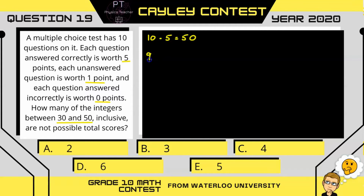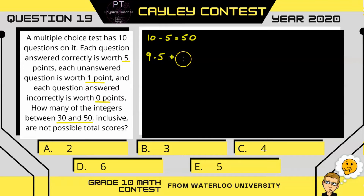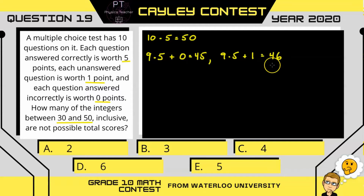Now if we only get 9 correct, we have two options. First option is you get 9 correct, which would be 45, plus if the other one is incorrect, that would be 0 points — that's 45. Or you could leave the other one unanswered and get 1 point, which would be 46. Notice we're missing the possible point scores of 47, 48, and 49.